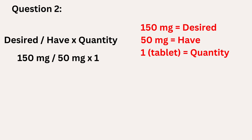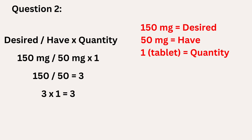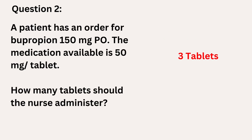Now that the equation is set up we're going to break it down. First we divide 150 milligrams by 50 milligrams, and the answer is 3. We're going to multiply that answer of 3 by our quantity, which is 1. And 3 times 1 is 3. Remember, in our final step we want to provide our answer in the appropriate unit — in this case, tablets. So the nurse should administer 3 tablets to the patient.